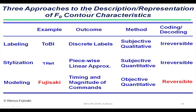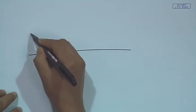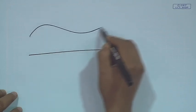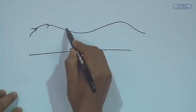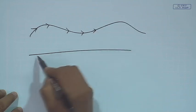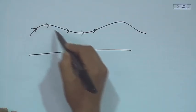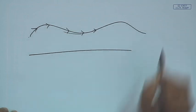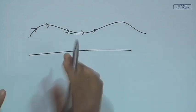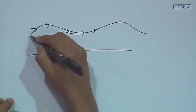For an utterance there is an F0 movement. This movement of F0 can be modeled by three things. One is called labeling, which is called ToBI; stylization; and modeling. So I can generate some model which can generate this contour, or I can assign some label.